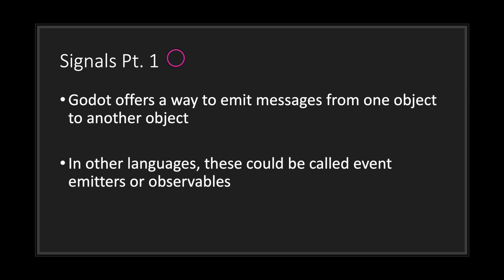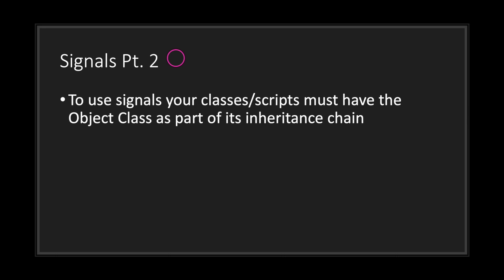That was the observable pattern as a concept. Now let's look at how to use it in GDScript. Godot offers a way to emit messages from one object to another through signals. In other languages this could be considered event emitters or observables. To use signals in your classes, the object class must be part of your inheritance chain.